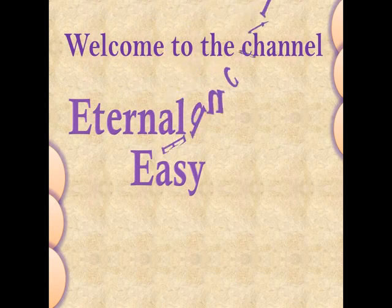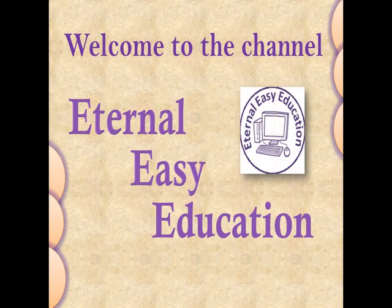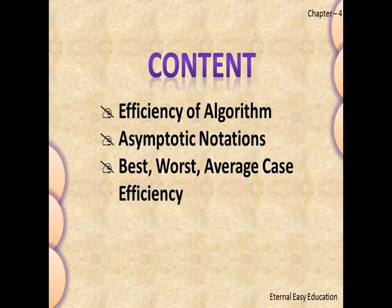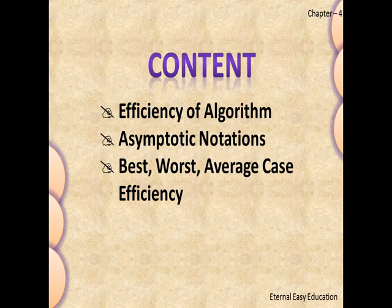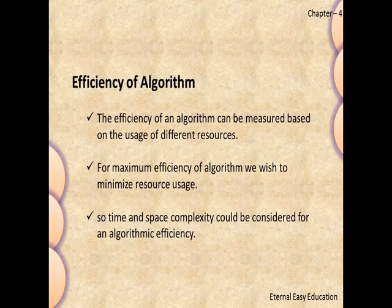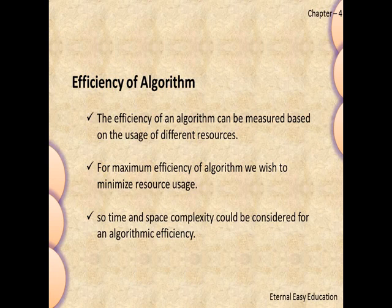Hello students, welcome to the YouTube channel Eternal Easy Education. In this session you are going to learn Chapter 4: Algorithmic Strategy. The content of the session includes efficiency of algorithm, asymptotic notations, and best, worst, and average case efficiency. We are going to deal with the efficiency of an algorithm. An algorithm is a step-by-step process to do a task, and we have already learned the characteristics of algorithm.